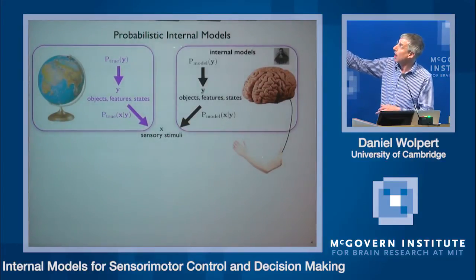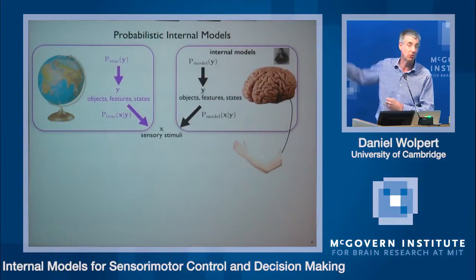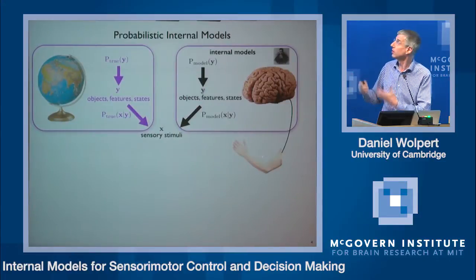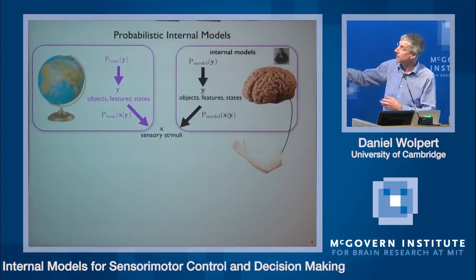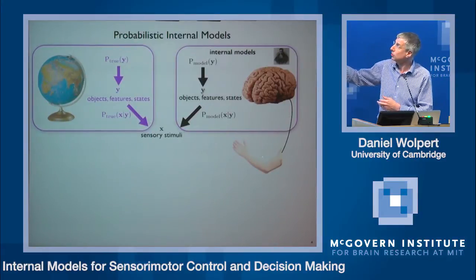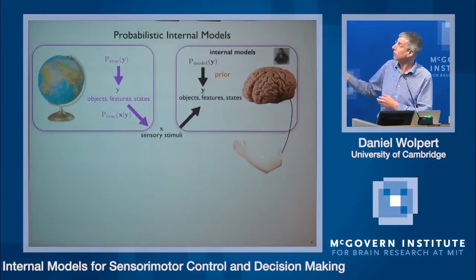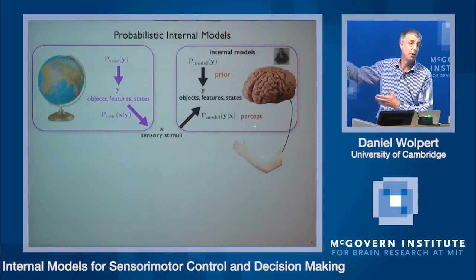We have a model inside our brain which may tell us how we expect to see objects, features, or states of the world, and another model which tells us, given a particular state of the world, what the probability of different sensory inputs is. These are two forms of internal representations. If you have these, then given a particular sensory stimulus, you can use the prior to turn the arrow around and generate the probability of a particular state of the world given sensory input — the percept.